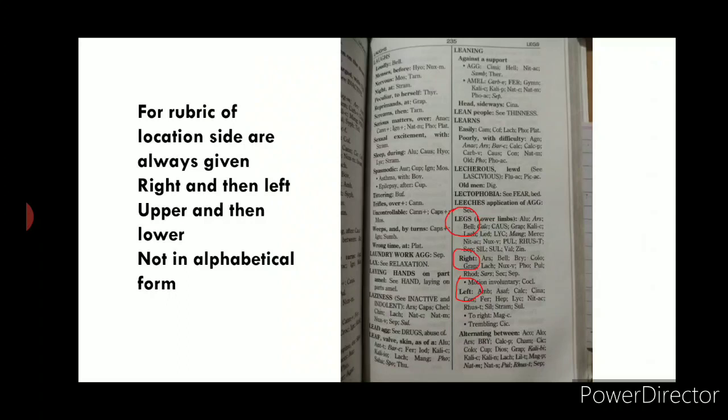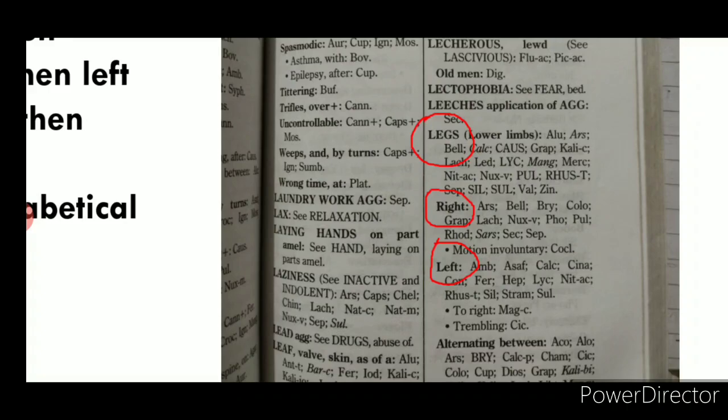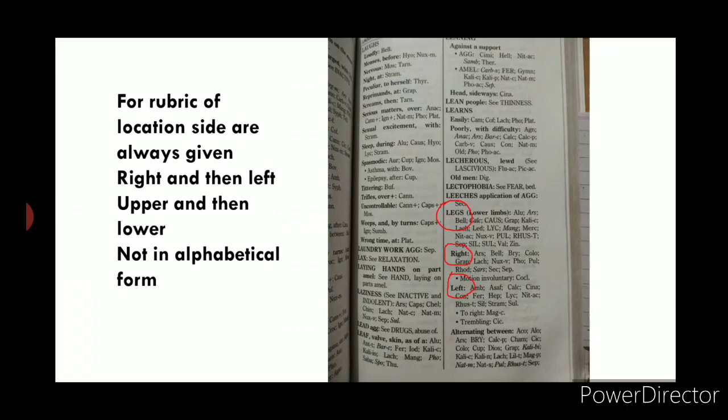For location rubrics, sides are given with right always first and then left, and upper always first then lower — this is not in alphabetical order. For example, in the rubric 'Legs/Lower Limb,' the side sub-rubrics are given first as right and then left.